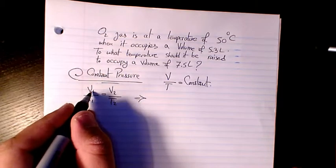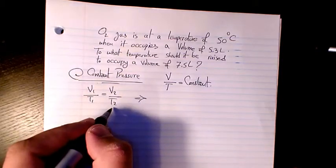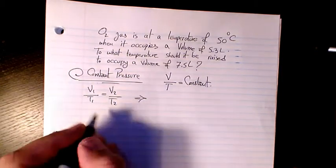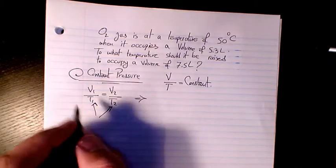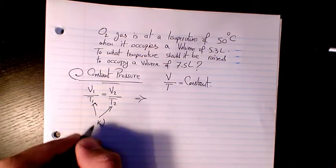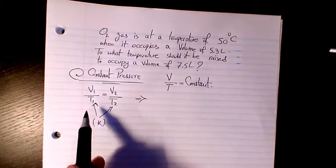T2. V1 is initial volume, T1 is initial temperature, V2 is final volume, T2 is final temperature. You need to know the temperature must be in terms of Kelvin, always, not Celsius. So you always need to be